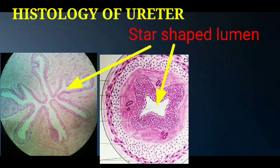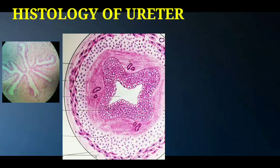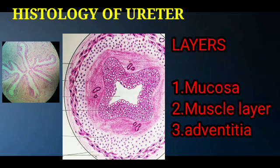This picture is showing a transverse section of the ureter. It is clear that the lumen of the ureter is star shaped. Outward to the lumen, we have layers: mucosa, muscle layer, and adventicia. These three layers are histologically different.